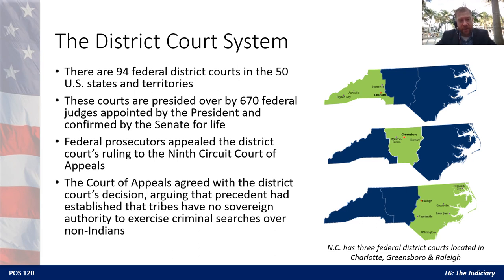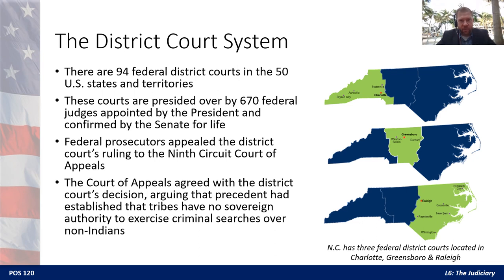Federal prosecutors in the Cooley case appealed the district court's ruling to the next level — the appellate court, which was the Ninth Circuit Court. They basically went to the appellate court and said they didn't think the district court ruling in Montana was correct. In appellate court cases, you can't introduce new evidence or new witnesses. It's mostly an exercise in writing — you make a written case for why this should be appealed — and then there's usually oral arguments as well. The court of appeals actually agreed with the district court decision, arguing that precedent had been established that tribes had no sovereign authority to exercise criminal searches over non-Indians. So the government ended up losing its appeal.